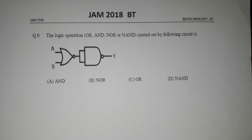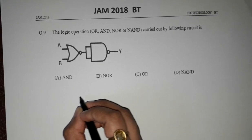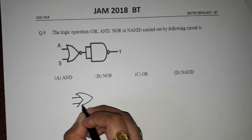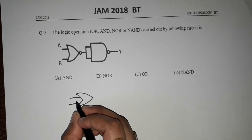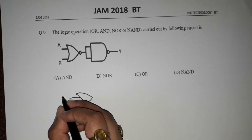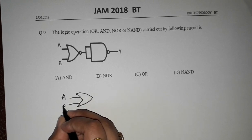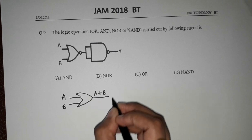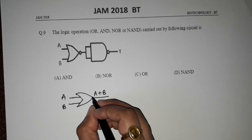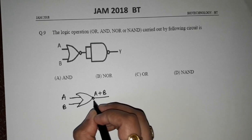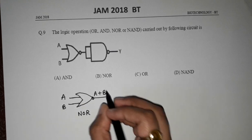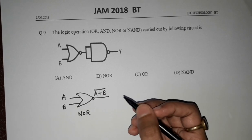Let us analyze the circuit. This is a two-input OR gate. If A and B are the two inputs, then we get A plus B at the output. And if there is a bubble, it indicates a NOT — that is, NOT of OR, which is a NOR gate — and the output becomes A plus B, whole bar.